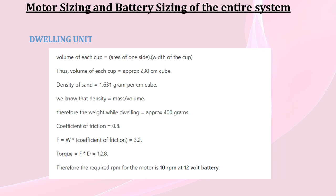Next, we take up the dwelling unit. Here volume of each cup is equal to area of one side into width of the cup. Thus, volume of each cup is approximately 230 cm³. Density of sand is 1.631 g per cm³. We know that density equals mass by volume. Therefore, the weight while dwelling is equal to approximately 400 grams. Coefficient of friction is 0.8. That implies force equals W into coefficient of friction that is 3.2. Torque equals F into D. This is 12.8. Therefore, the required rpm for the motor is 10 rpm at 12 volt battery.